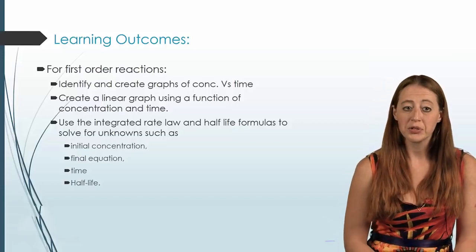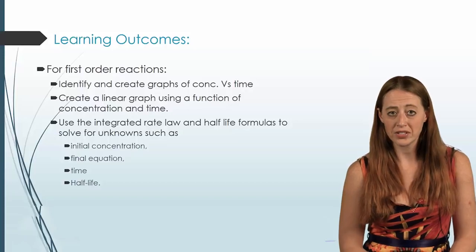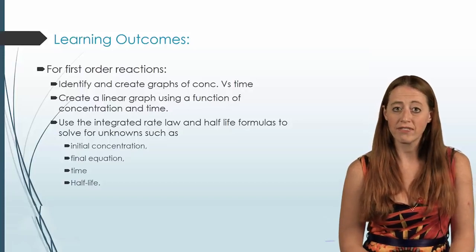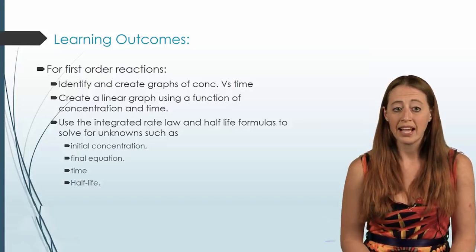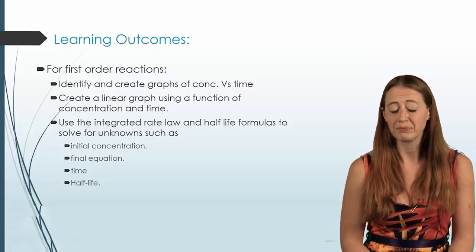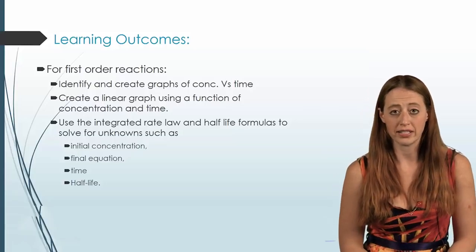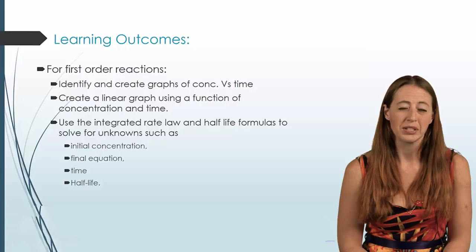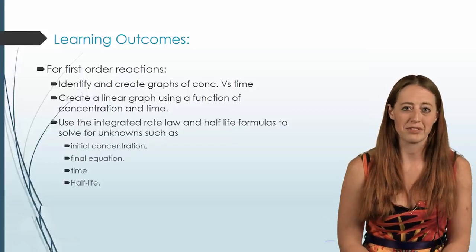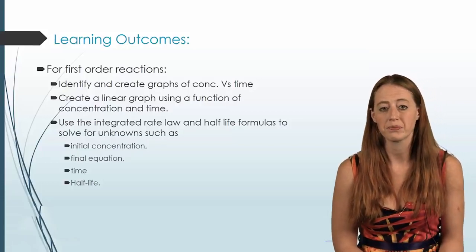Just like with zero order, you should be able to go back and forth between your initial concentration, final concentration, time, and half-life for any given set of information. We'll do some examples in this one too — we kind of skipped that for zero order since those are the easier examples.